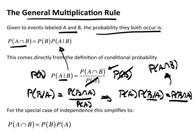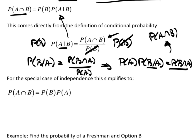Okay. For the special case of independence, this specifies or actually simplifies to probability of A and B is probability of B times the probability of A. And, actually, I've already discussed that. I explained why that's true.